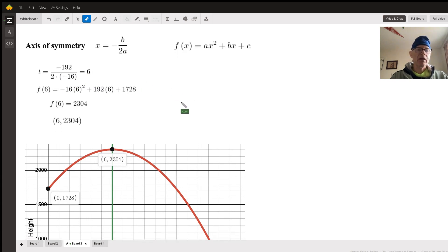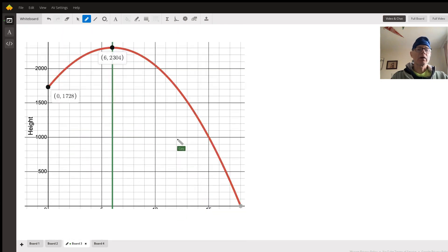So what we get here is negative 192 divided by negative 32, which gives us positive 6. And then we can take that positive 6 and have it replace x in the function. So I'm going to square 6 here, multiply by negative 16, multiply 6 by 192, add our 1728, and we're going to get the same thing, 2304. And here is our axis of symmetry, so-called, because it splits the parabola into two halves that are identical.